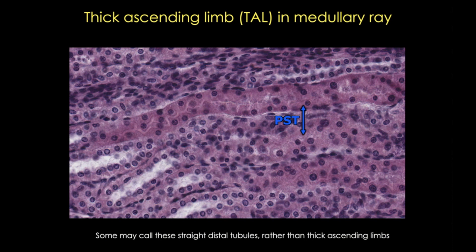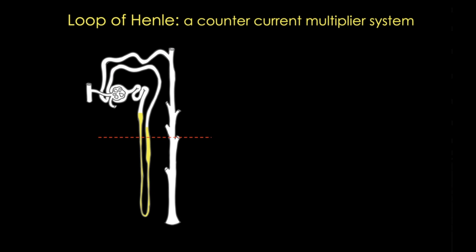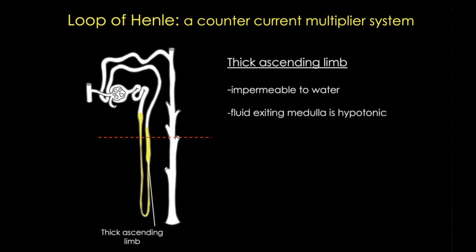The thick ascending limb is easier to visualize in the medulla. Here we have our medullary ray, and I've marked the proximal straight tubule — you can appreciate that they have few visible nuclei and fuzzy lumens. Compare those to the thick limbs, where you can see more visible nuclei and the lumens are not quite as fuzzy. An important take-home message is that the thick ascending limb is impermeable to water.